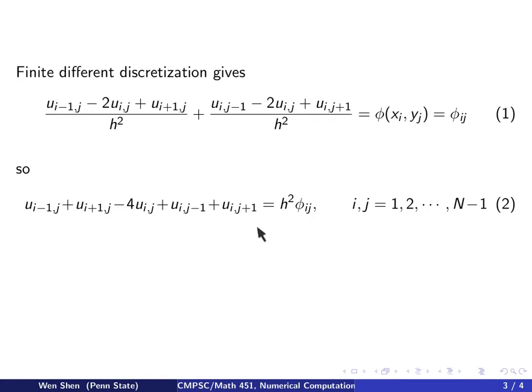We see that the left-hand side is the same as the discrete Laplace operator, but the right-hand side is not zero anymore. It's h squared times this phi_ij, which is the source term in the Poisson equation.